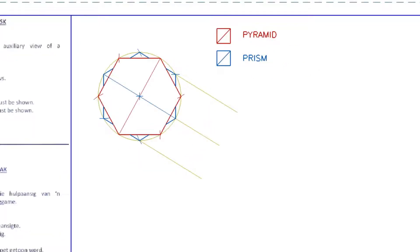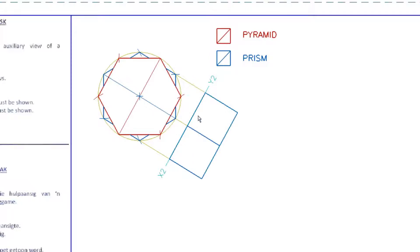Next we want to construct the front view. We're going to start with the prism — take the sides, the middle point, and this side, and just project them. These lines will obviously be at 30 degrees. Then I'm going to place down an X to Y line to separate the auxiliary from the front view. They don't actually require it, but it is safe to do so and makes it a little bit easier to measure and plot your points. You can still do it without adding it.